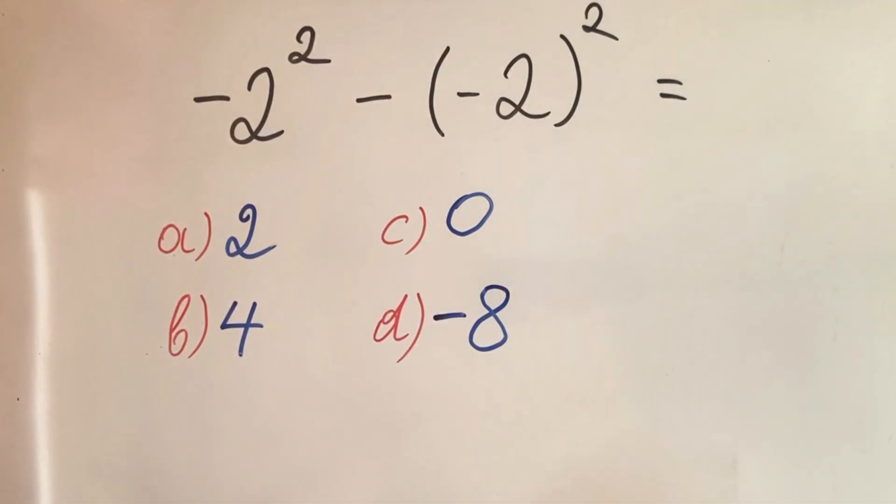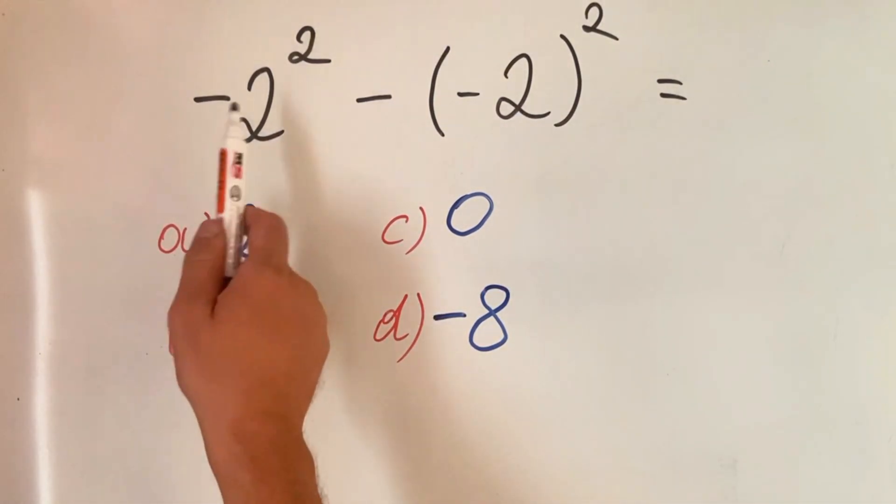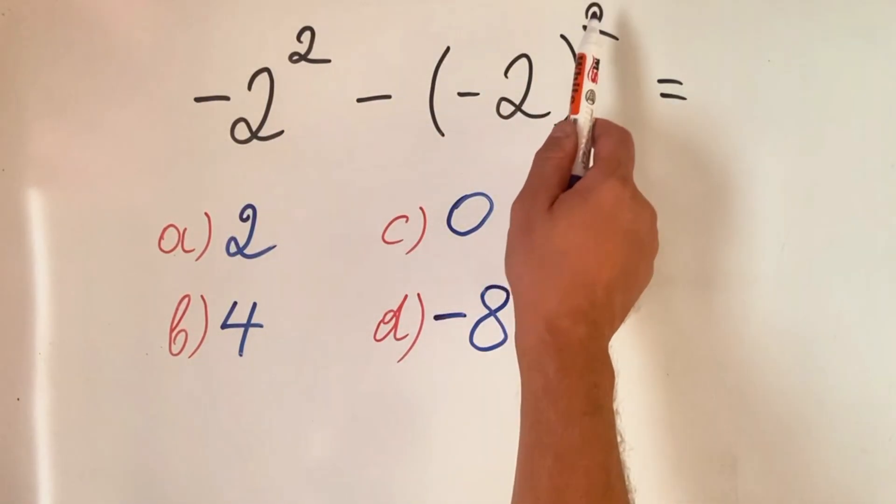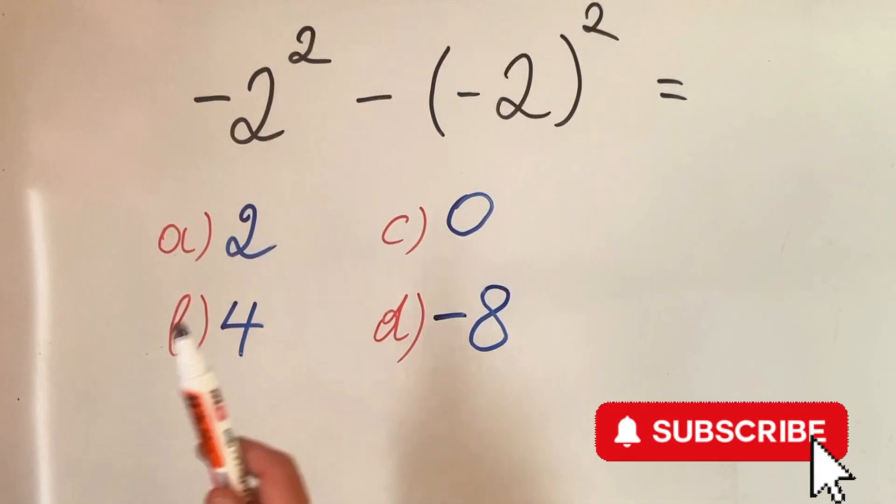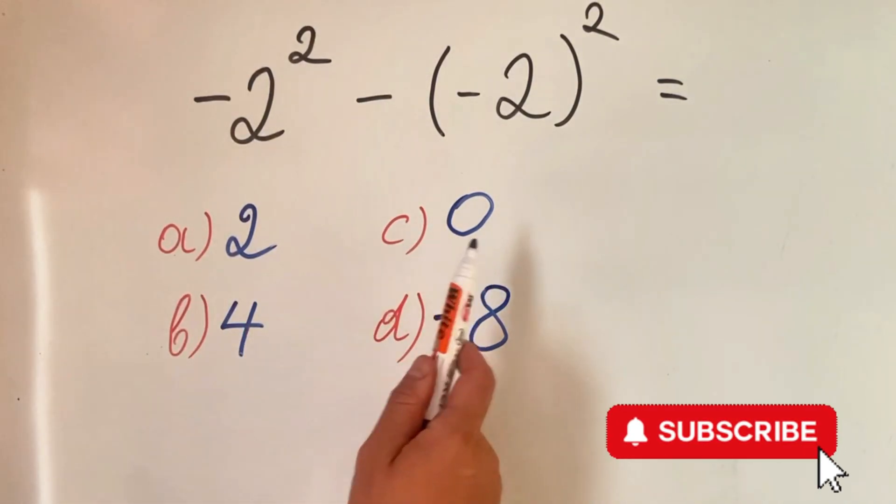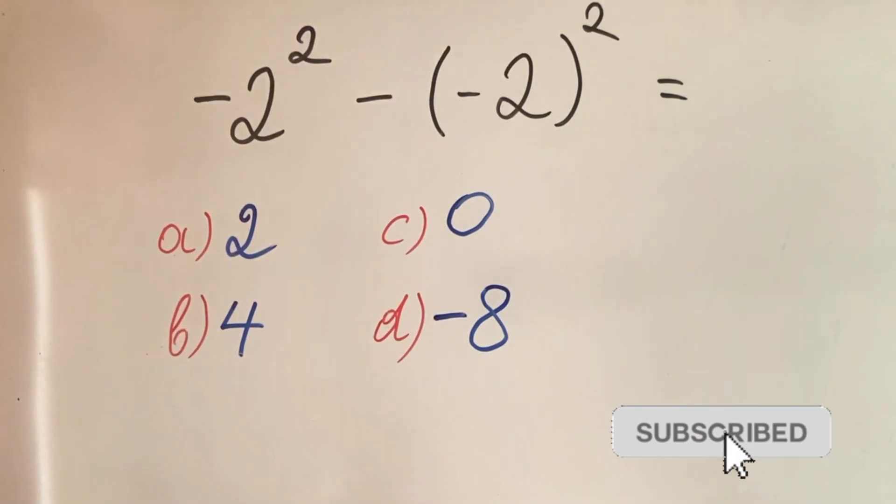Hello everyone, today we have this interesting equation: minus two squared minus minus two in brackets all squared. So before going into solving the equation, please have a look and take a guess what would be the answer and please write right now in the comments your answer.